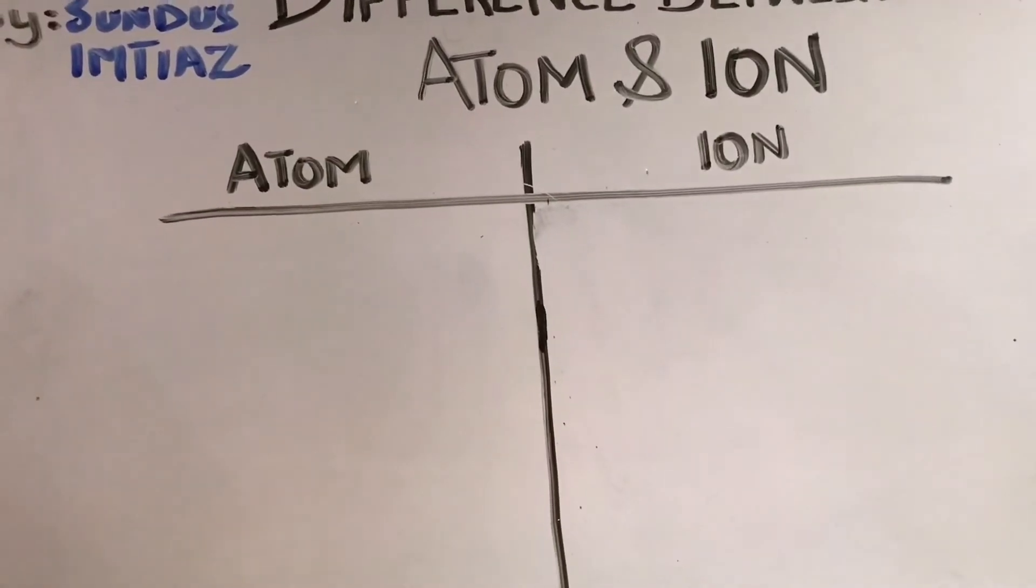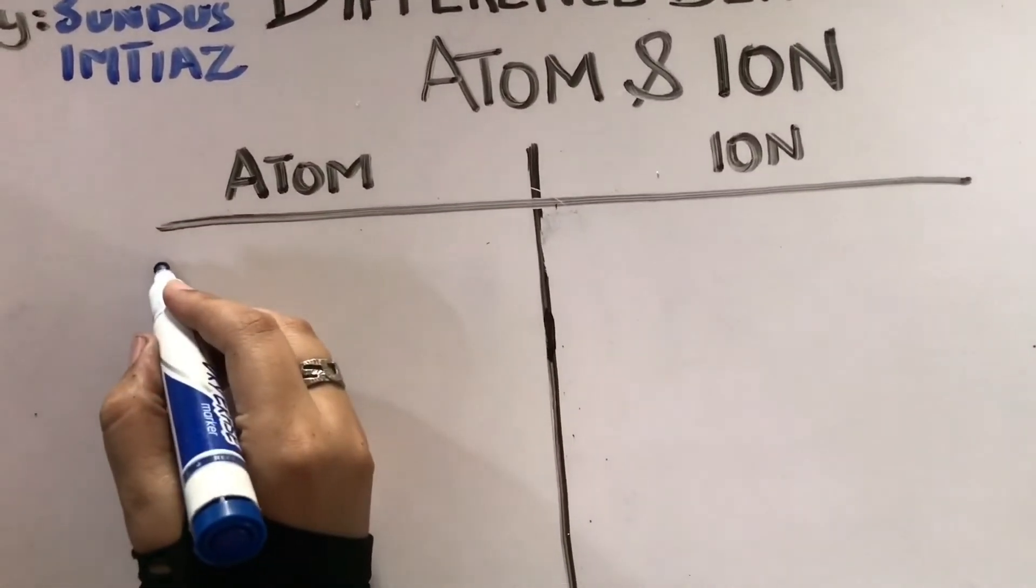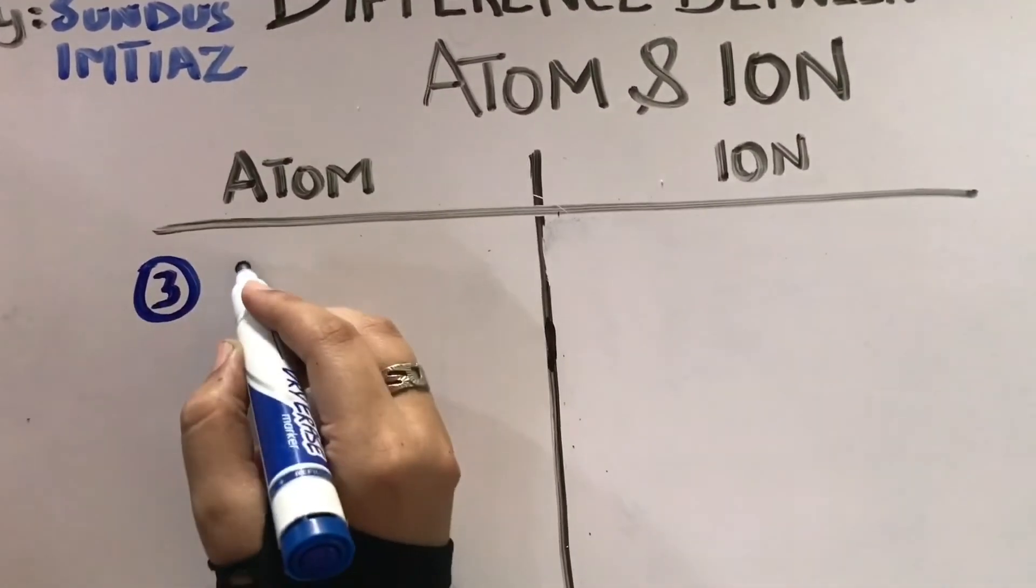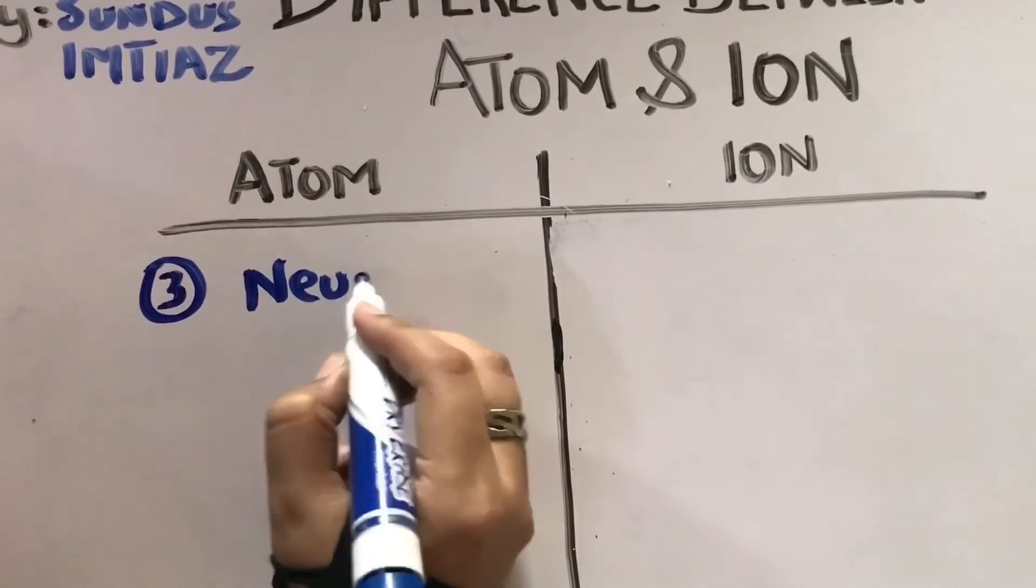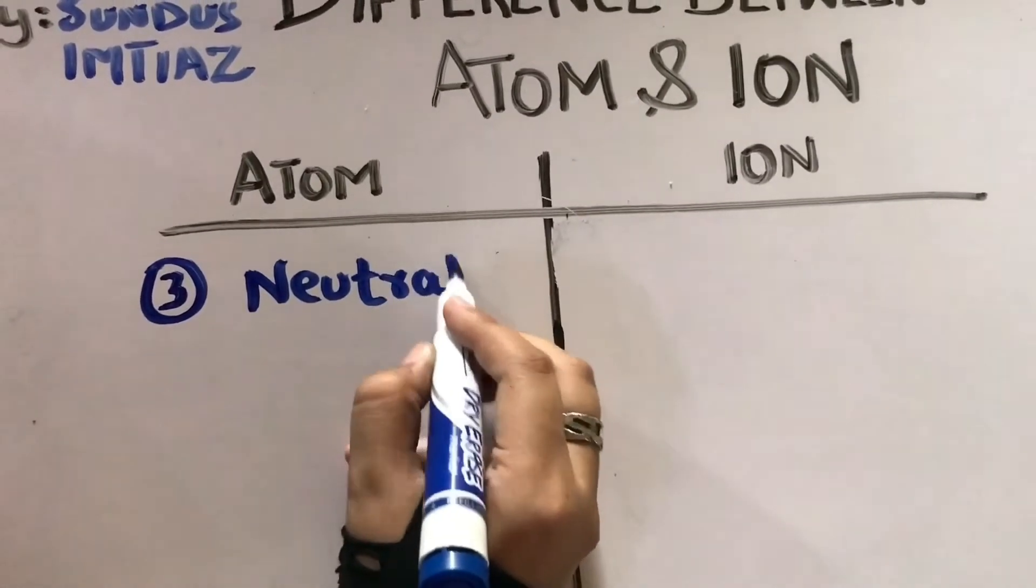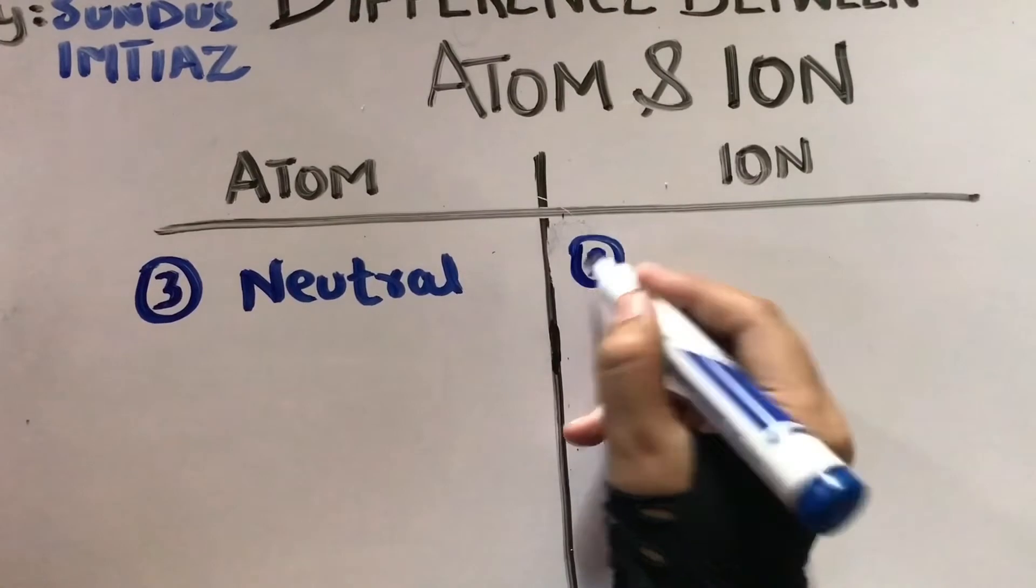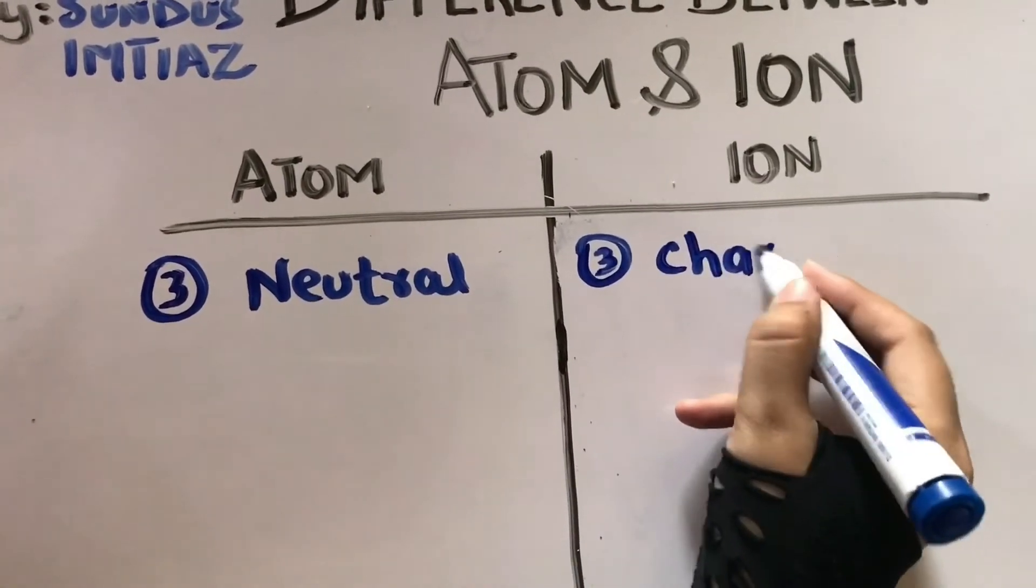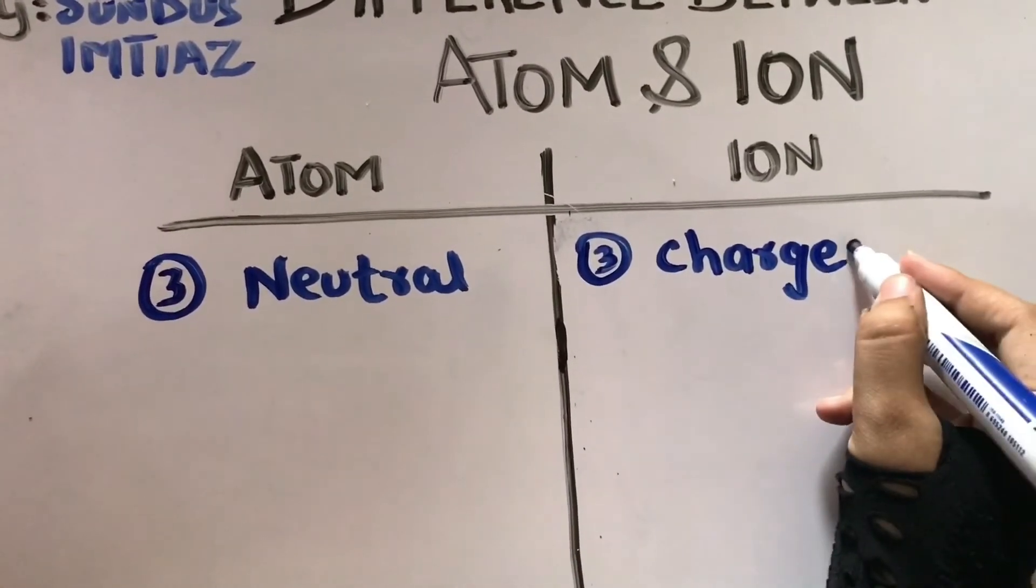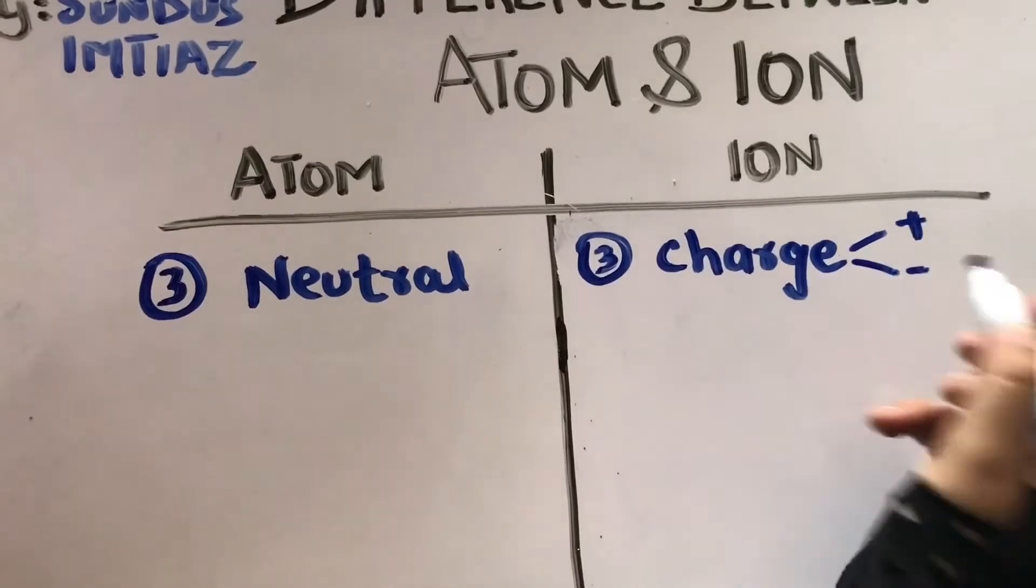I have told you that atoms do not contain any charge, so it means the atoms are neutral. Likewise, ion is charged particles. It contains either positive charge or negative charge.